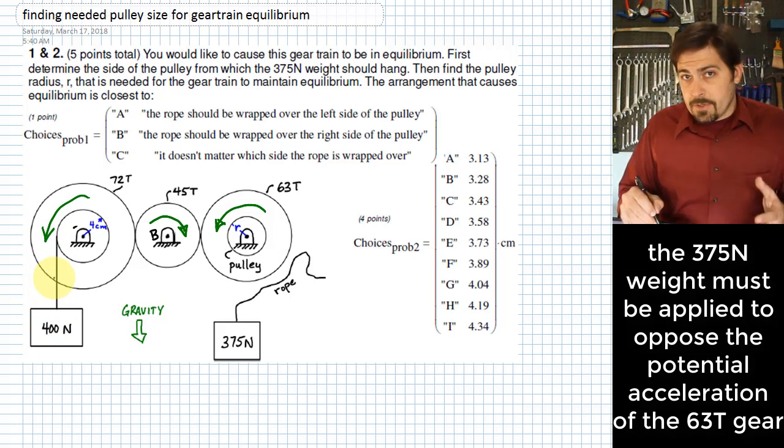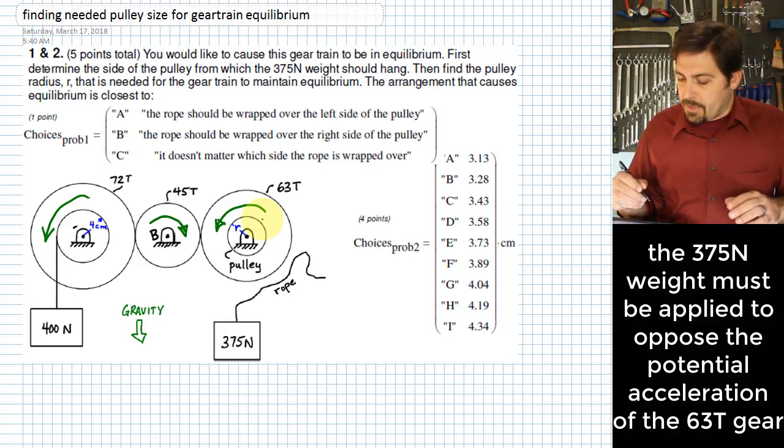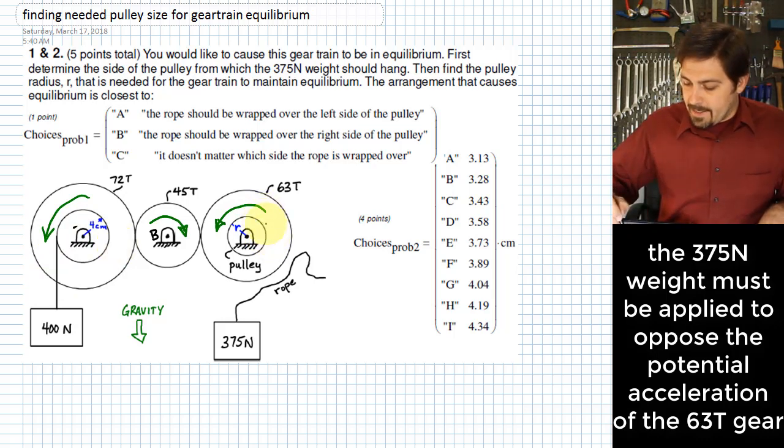What we need to do is figure out how would we counter the idea that this is the direction it would want to accelerate if we didn't have anything else going on. So we have to look at the gear over here, the 63-tooth gear, and see that we would need to put a force on it in a direction that would counter the direction that it would want to turn if the only force we had was the 400N force.